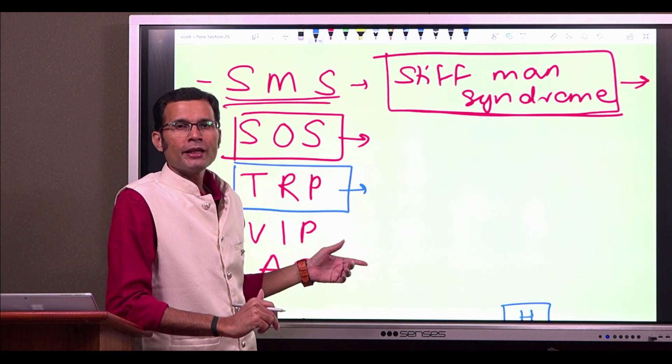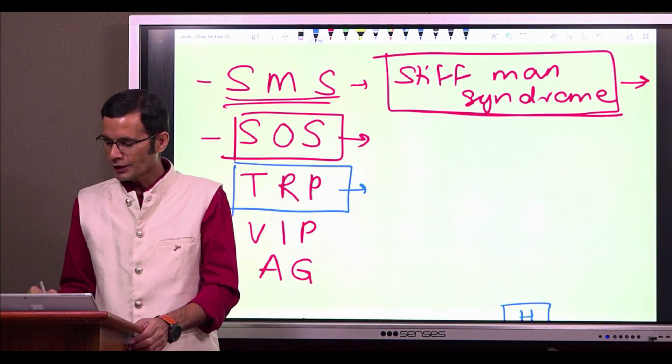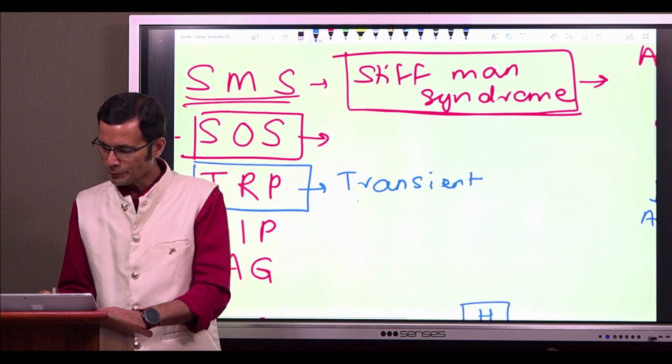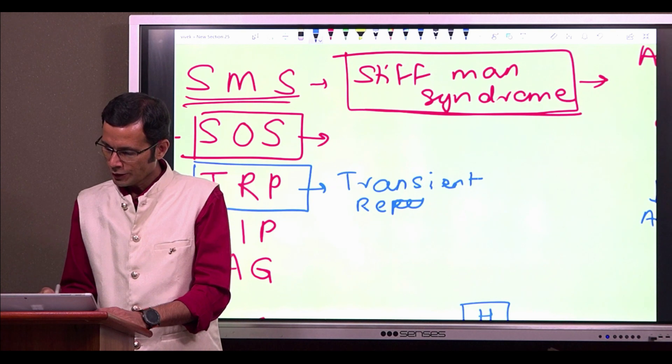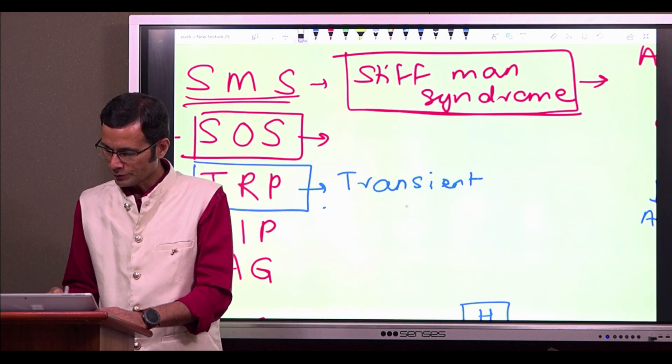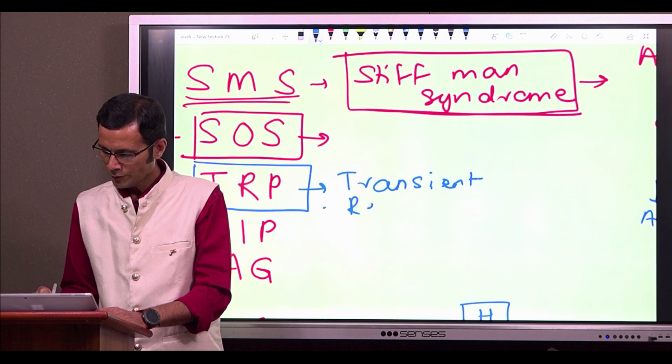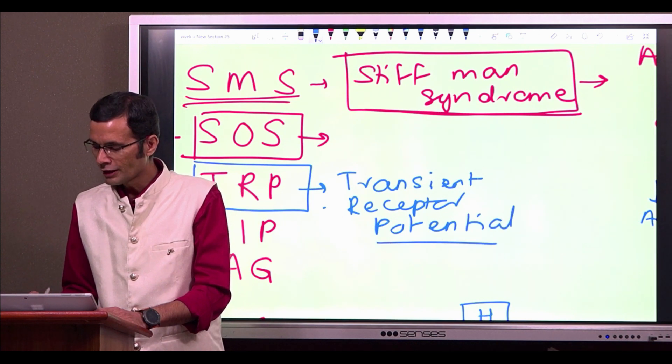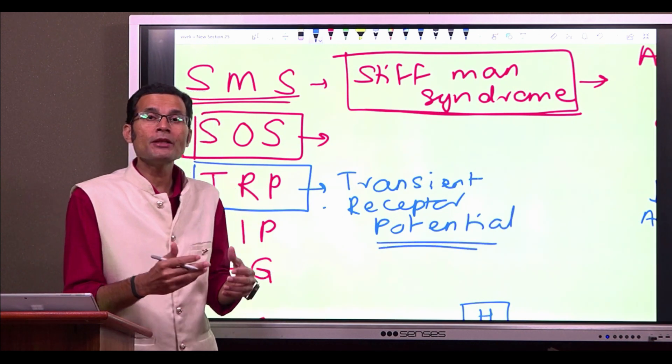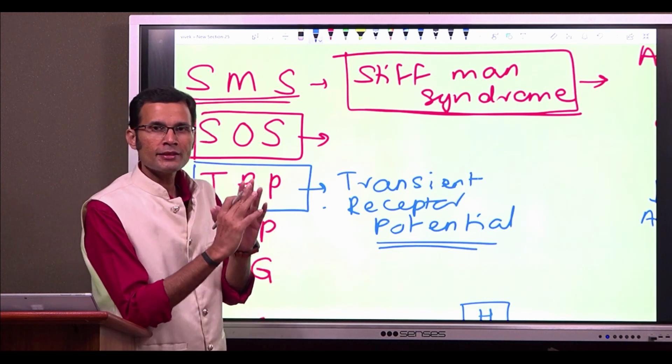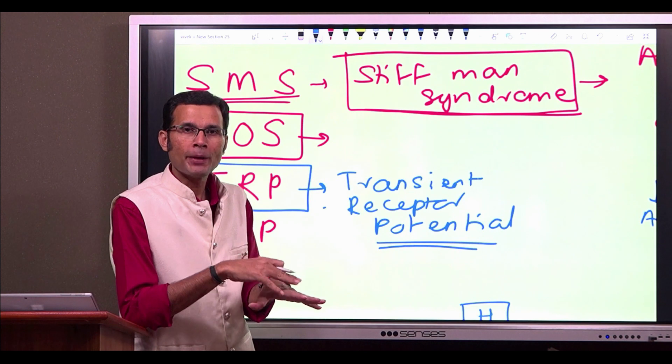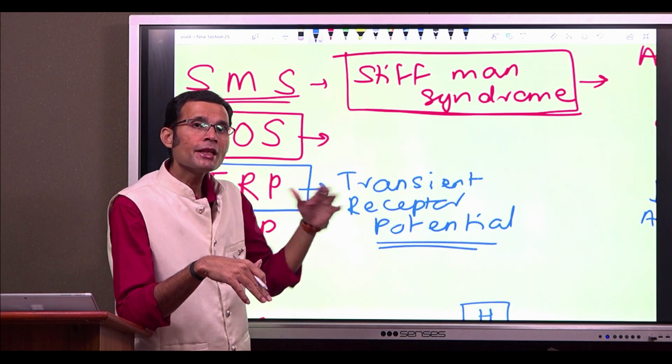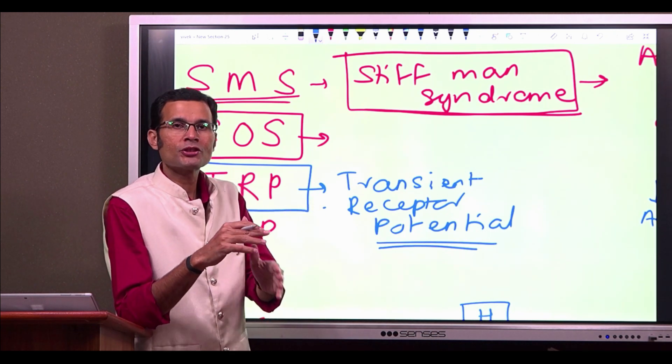What is the full form in physiology or medicine? TRP in physiology stands for transient receptor potential, transient receptor potential. This is a category of receptors. They are called as, it is called as a TRP super family. These receptors are the sensory receptors at the periphery and the super family is called as TRP super family, transient receptor potential super family.